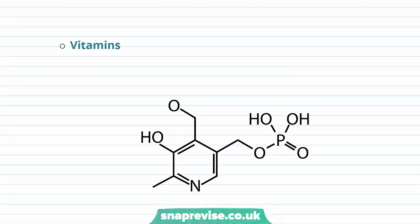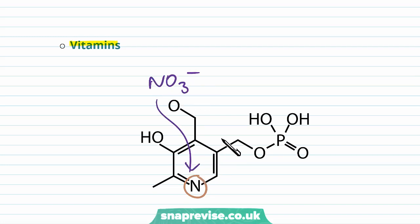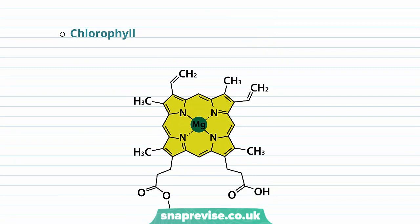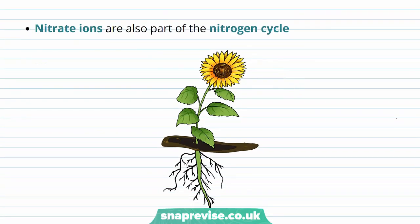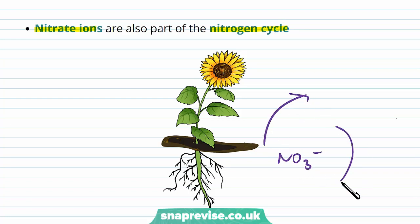We also need nitrogen in our vitamins — vitamins that either plants or animals make. It's normally a component of the vitamin molecule, and so nitrate has that nitrogen to donate into making the vitamin. Nitrogen is also found in chlorophyll, the green pigment found in plants used in photosynthesis. You can see the nitrogen atoms here surrounding a magnesium ion. Just like ammonium, nitrate ions are an important part of the nitrogen cycle, which helps to circulate nitrogen between the air and the plant.